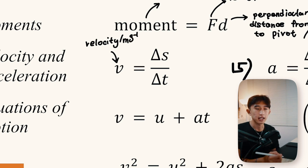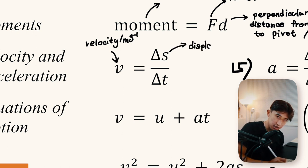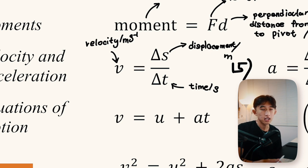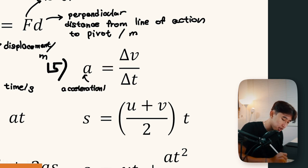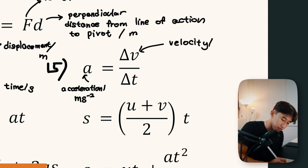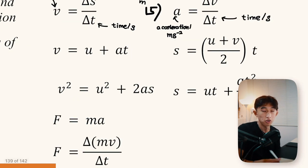Acceleration (m/s²) is the rate of change of velocity — change in velocity divided by change in time. On a velocity–time graph, the gradient represents acceleration at that point. The SUVAT equations of motion all share the same symbols: s is displacement, u is initial velocity, v is final velocity, a is acceleration, and t is time.